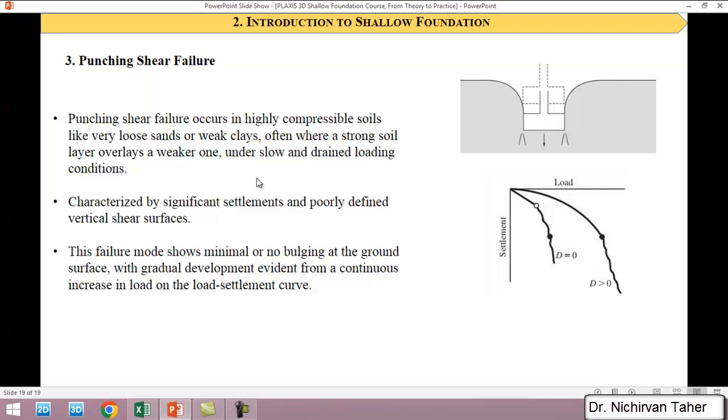This type of shear failure is characterized by significant settlement and poorly defined vertical shear surfaces. Since in this type of shear failure the soil is highly compressible, a large amount of settlement is expected. This failure mode shows minimal or no bulging at the ground surface. As we can see in here, there's no bulging near the ground surface. With gradual development evident from a continuous increase in load on the load-settlement curves, and as can be seen in here, the load continuously increases and the settlement increases.